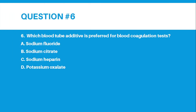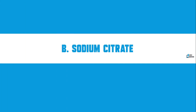Number 6: Which blood tube additive is preferred for blood coagulation tests? Letter A, Sodium Fluoride. Letter B, Sodium Citrate. Letter C, Sodium Heparin. Letter D, Potassium Oxalate. The correct answer for number 6 is Letter B, Sodium Citrate.